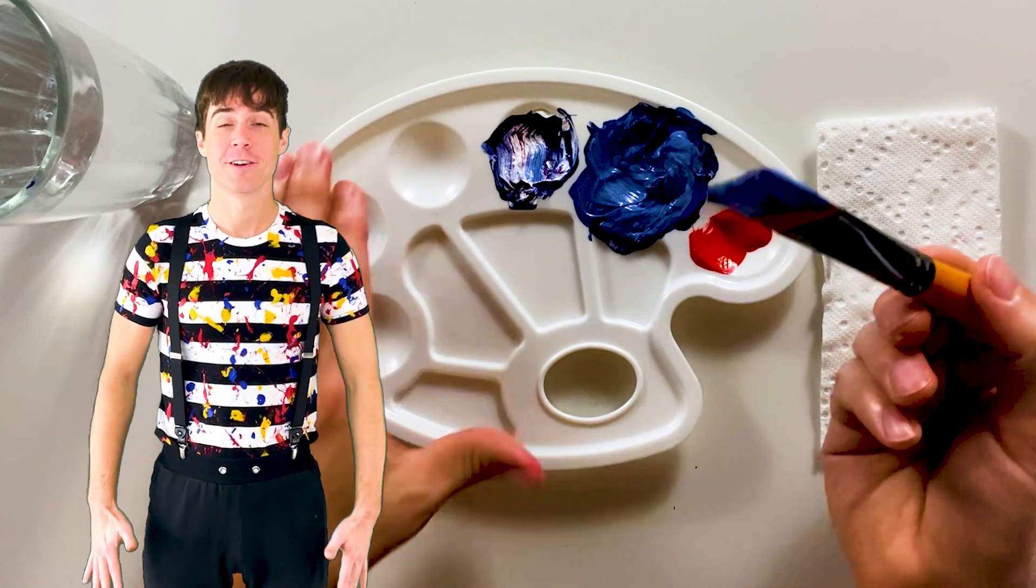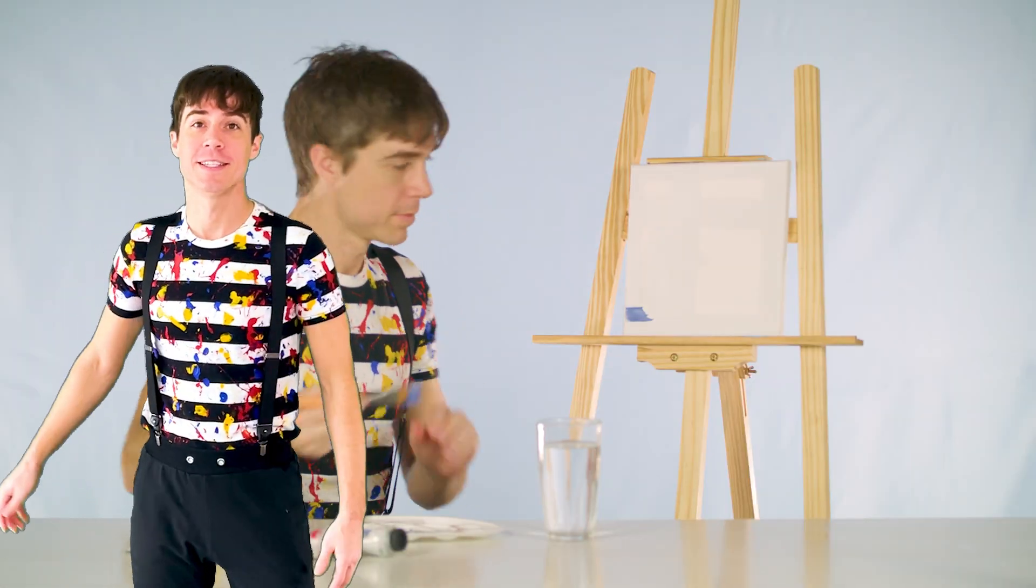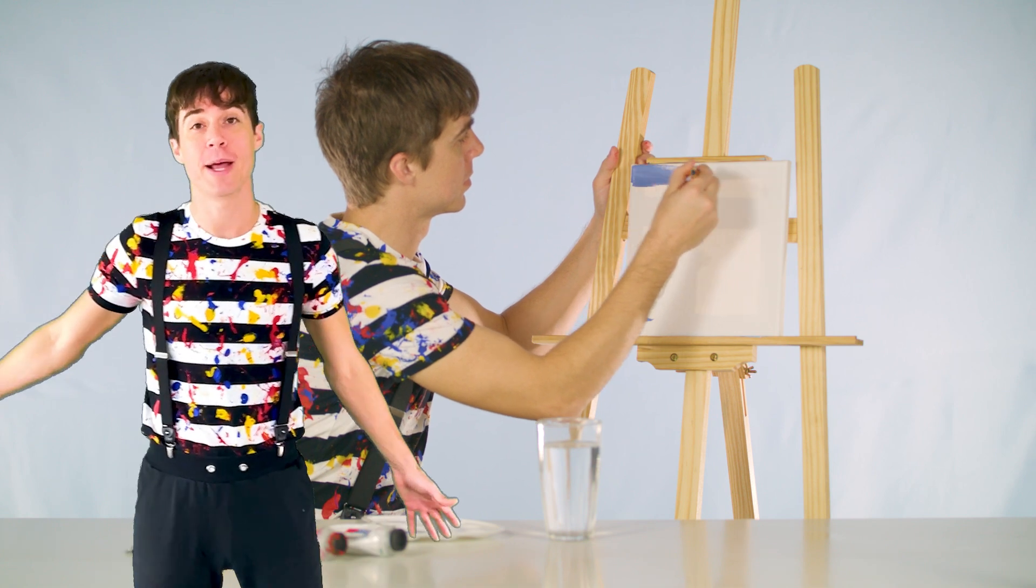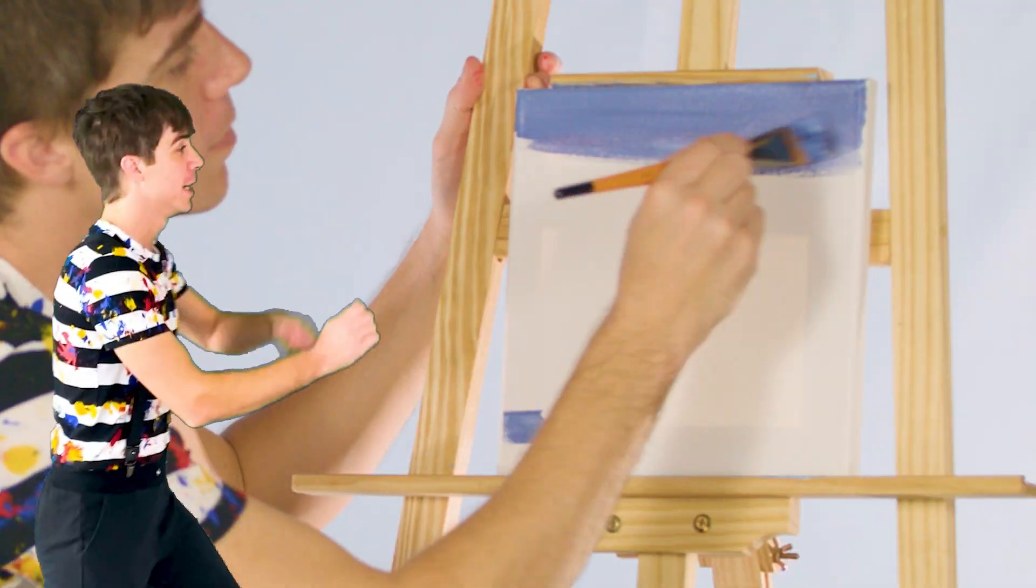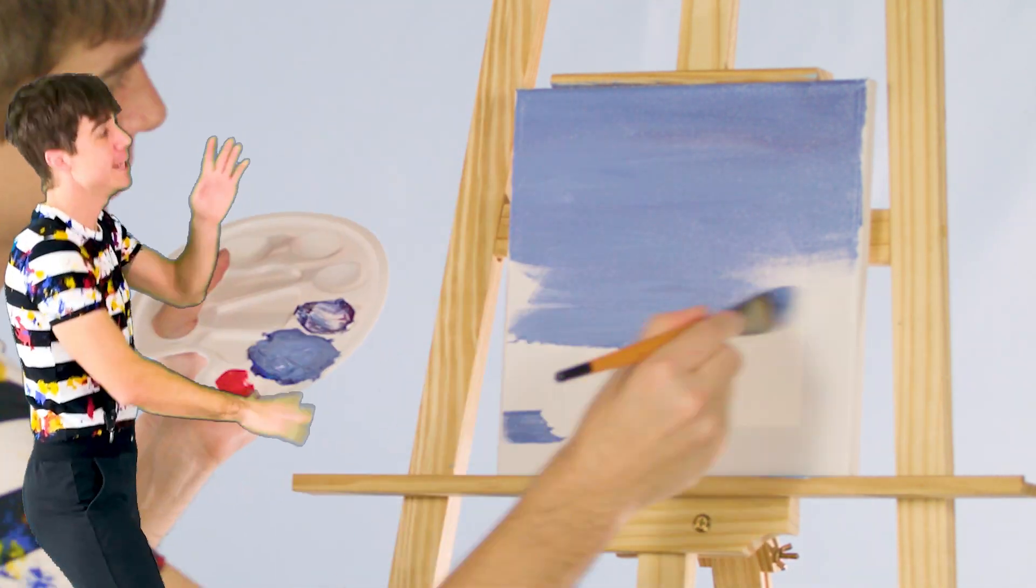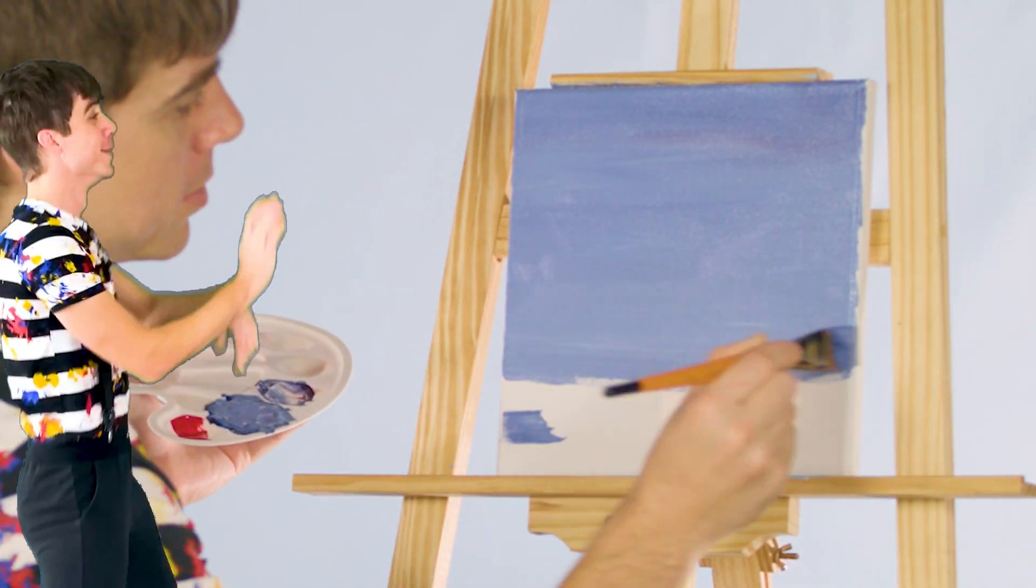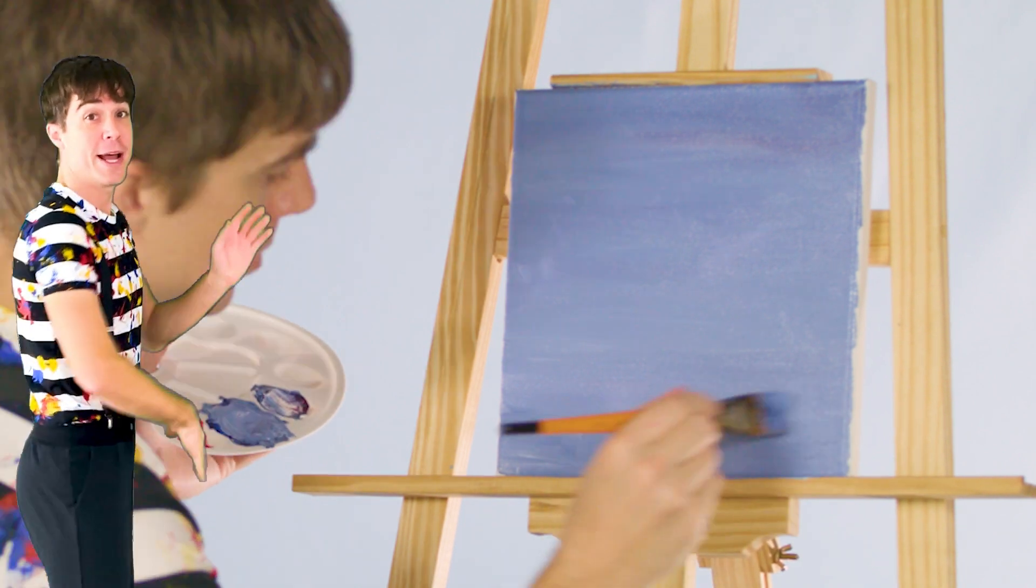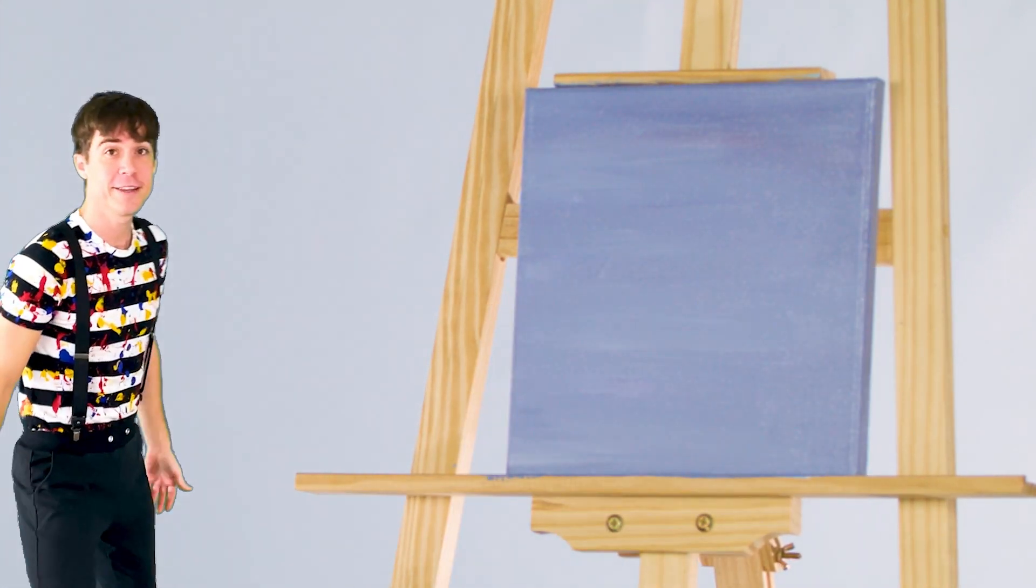Now that you've got your paint mixed, let's paint the entire canvas with that color. This will be the background. We're painting the background. Look, it's all coming together.